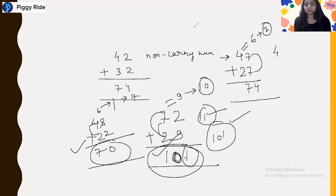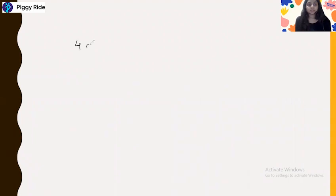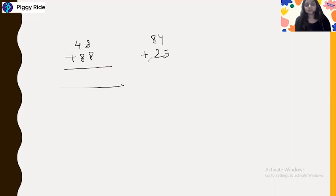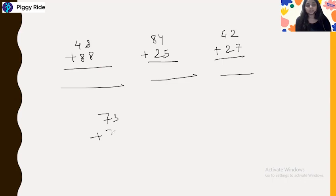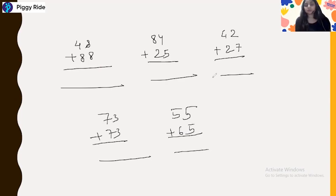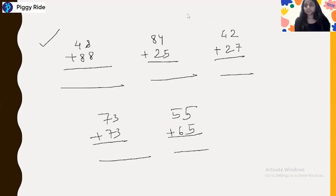For homework, solve these problems without pen and paper using the Viloknam method: 48 plus 88, 84 plus 25, 42 plus 27, 73 plus 73, 55 plus 65. We will meet in our next class where we will see more sutras and more additions. Thank you for joining the class.